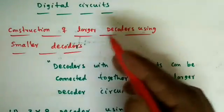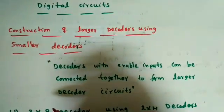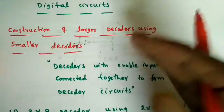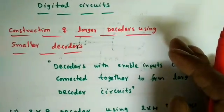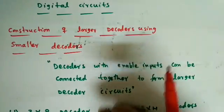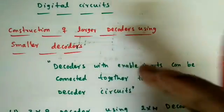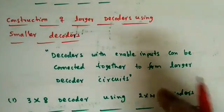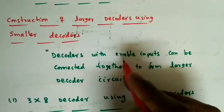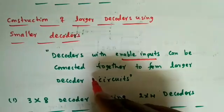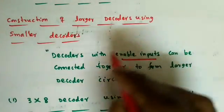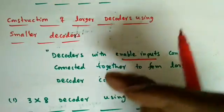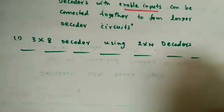We will see how to construct a larger size decoder using smaller size decoders — for example, using 2x4 decoders to implement a 3x8 decoder, 4x16 decoder, or 5x32 decoder. We may get questions on how many 2x4 decoders are required to implement a 4x16 or 5x32 decoder. The key point to remember is that decoders with enable inputs can be connected together to form larger size decoders.